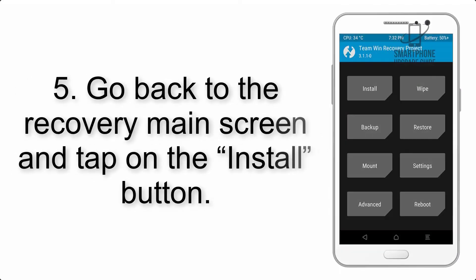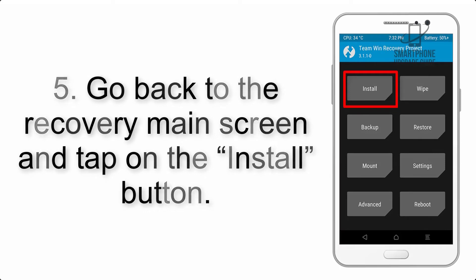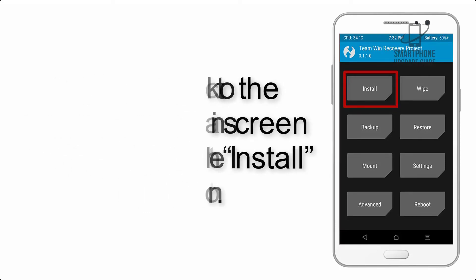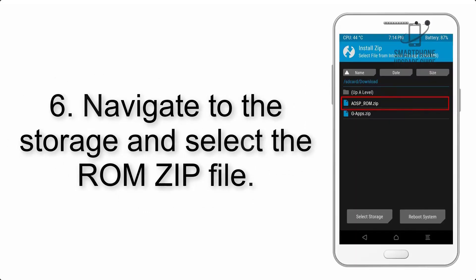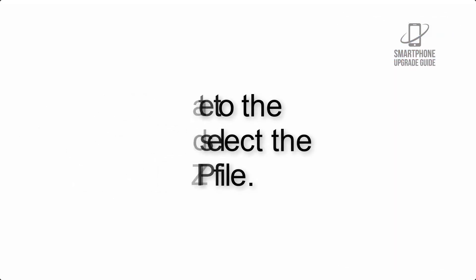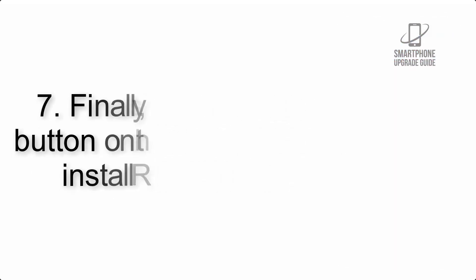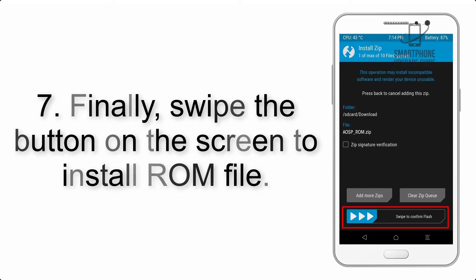Step 4: Swipe the button to wipe the device. Step 5: Go back to the recovery main screen and tap on the Install button. Step 6: Navigate to the storage and select the ROM zip file.